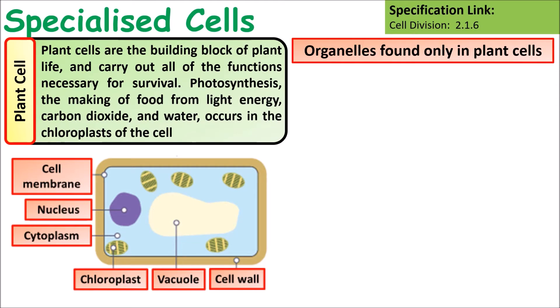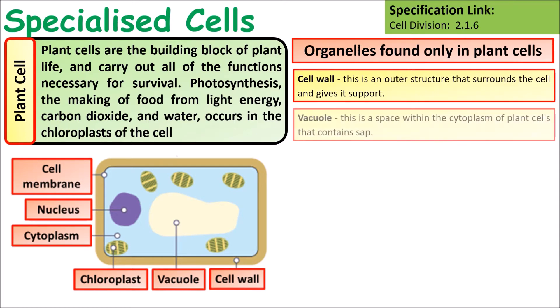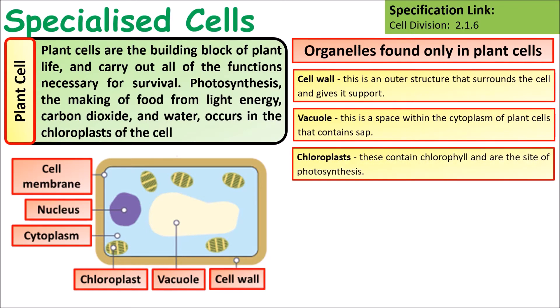Plant cells are found in plants and have a few organelles unique to them. They have a cell wall made of cellulose, which provides structural strength and support. They have a large vacuole — a space within the cytoplasm containing sap made of water — which helps enable cells to become turgid. Chloroplasts contain chlorophyll and carry out photosynthesis.